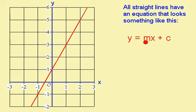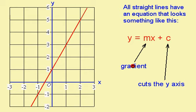Where the m is just a number and the c is just a number. m is the gradient. This is how steep the line is. c is where the line cuts through the y axis, here's the y axis here, and this line goes through at 1.